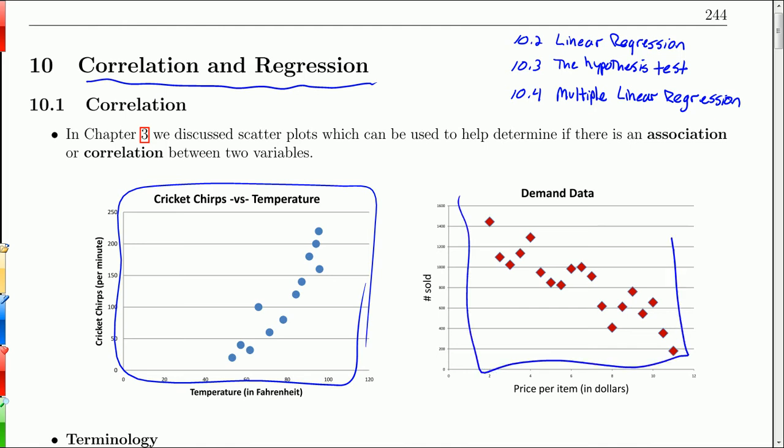And we basically say, does this data follow a linear pattern? And that's correlation. Correlation, we will come up with a correlation coefficient that tells us how well this data follows a line.